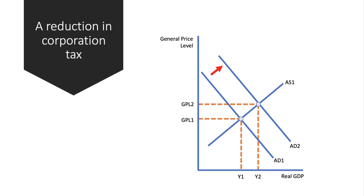Taking it slightly further, you can also think about the supply-side effects of higher investment. If lower corporate taxes lead to increased capital spending, aggregate supply could shift outward as well — from AS1 to AS2.